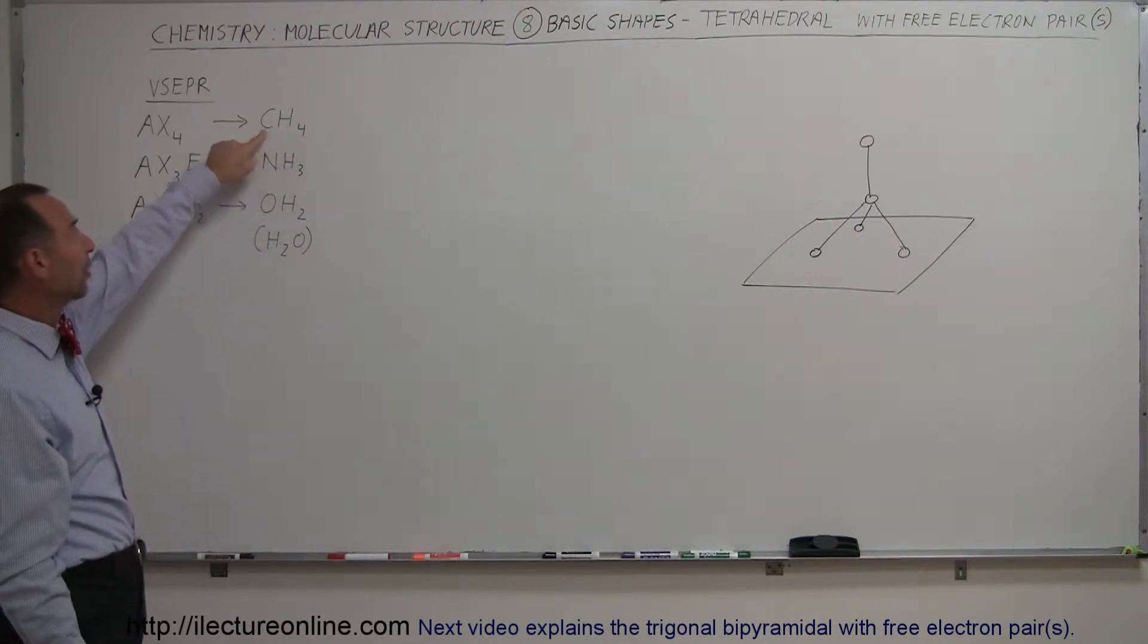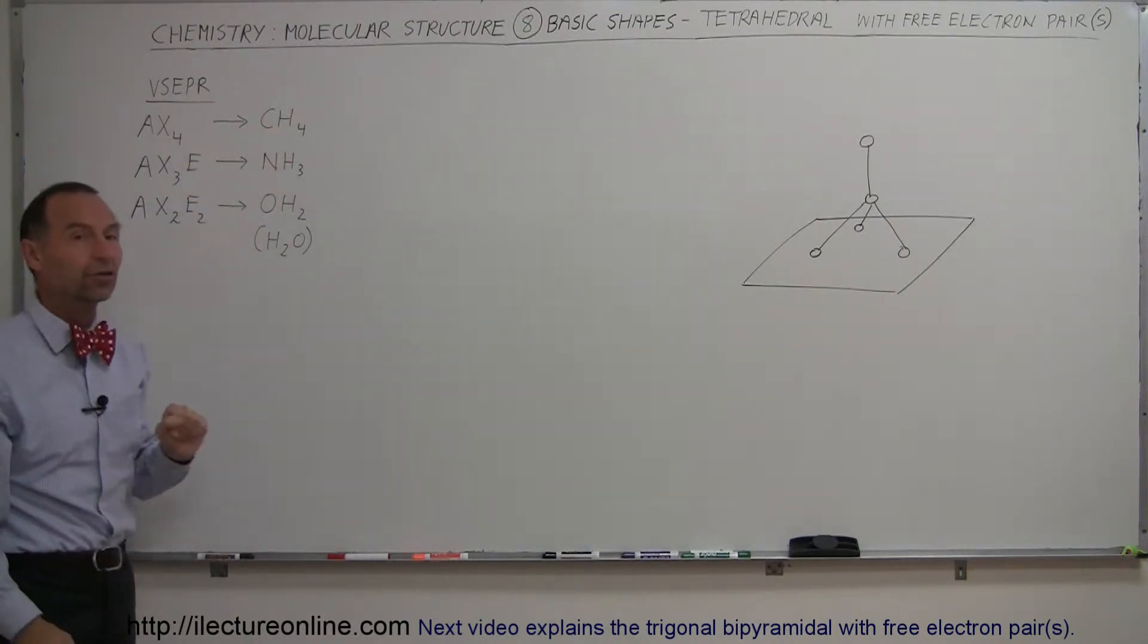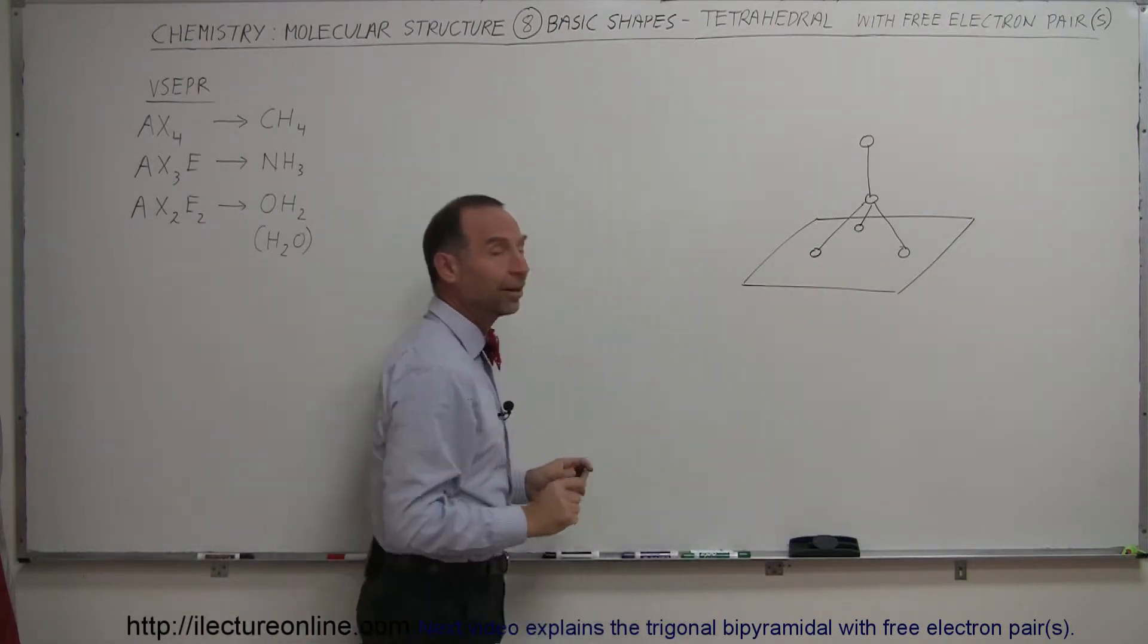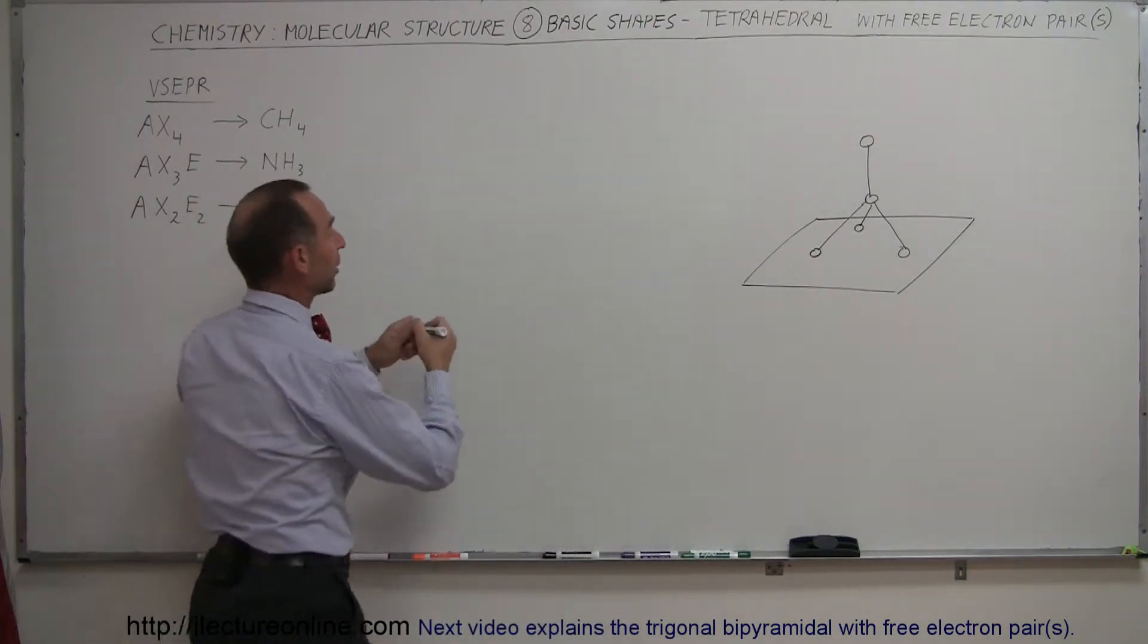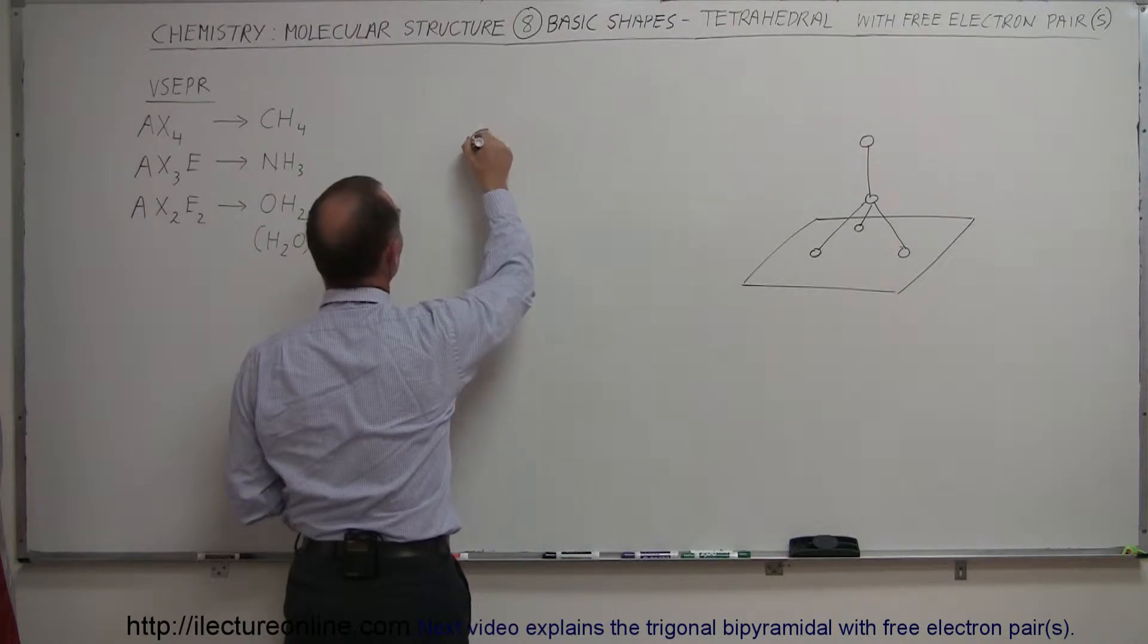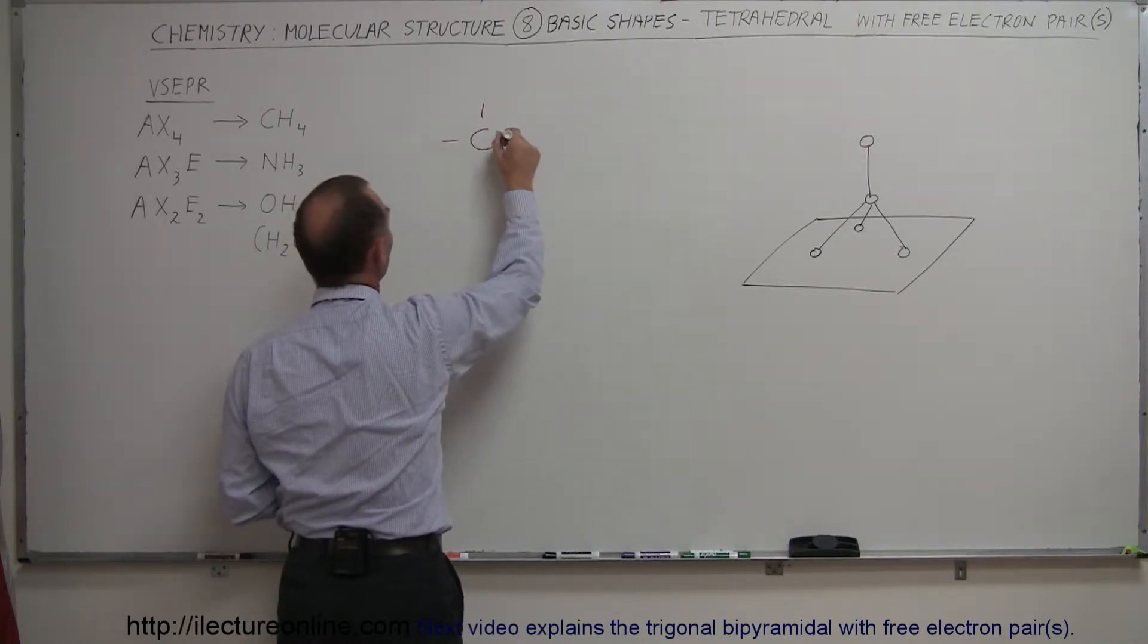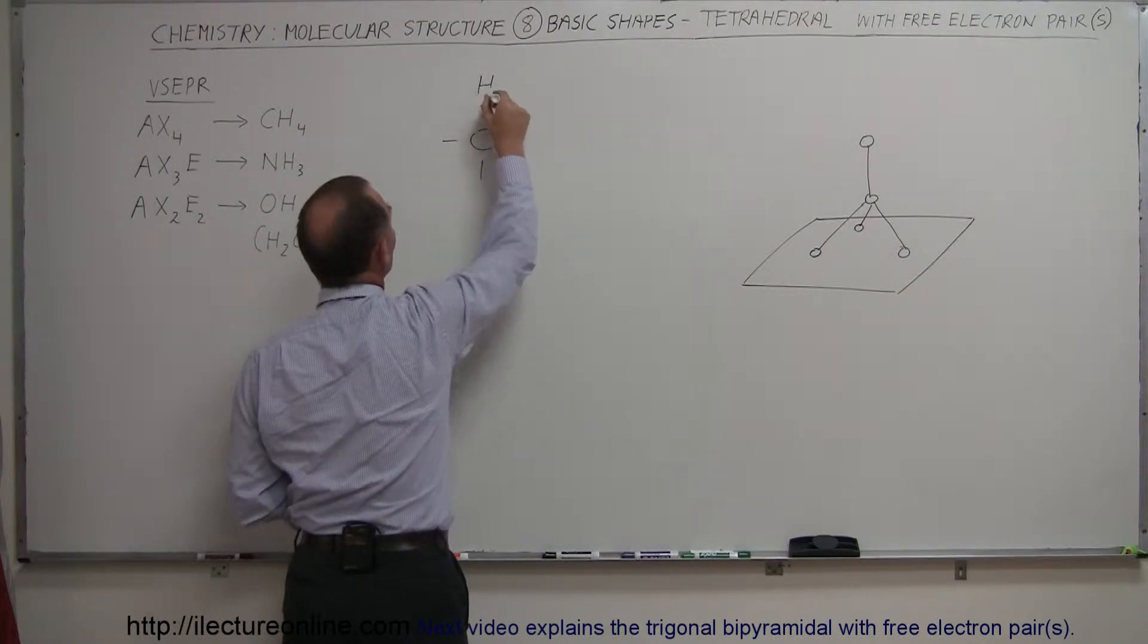Starting out with methane, we have one central atom, carbon, and four hydrogens. When we put those together, they will look like that. Why do they look like that? Well, if you take a look at it, carbon would be the central atom. We have four hydrogens, so they will make four bonds with each of the hydrogens like that.